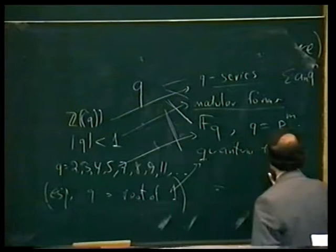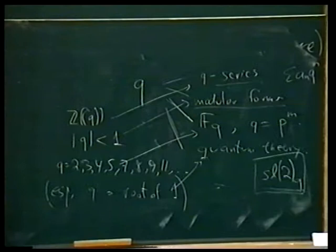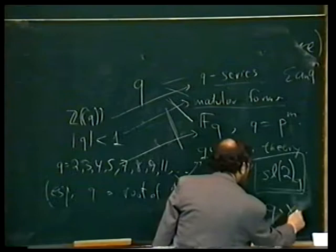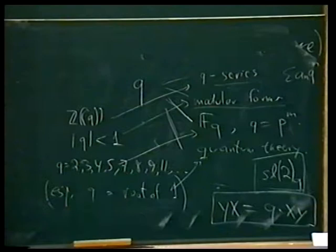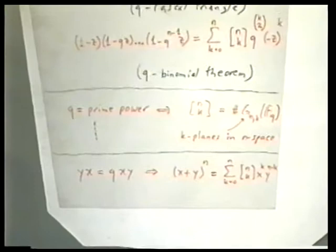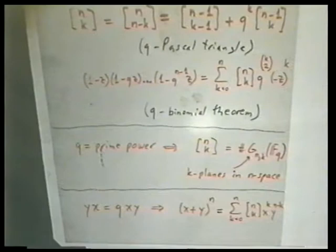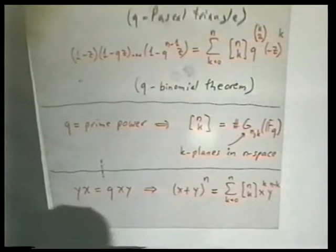Let me give the very first example. There are things floating around to which huge contributions have been made by many people in the audience — quantum groups, quantum invariants in topology, and the non-commutative torus mentioned by Connes. On the most primitive level, you can see the connection like this: the natural generalization of x plus y to the n is the sum over k of the q-binomial coefficient times x to the k times y to the n minus k, if yx equals q times xy. Special things happen when q is a root of unity.